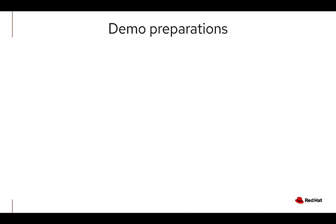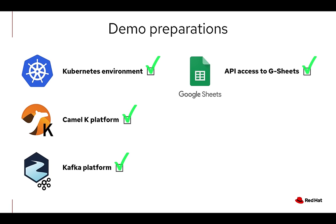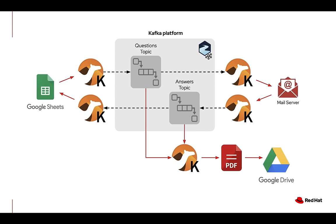First, we need some preparations to get this working. We need a Kubernetes environment ready, and then we want to deploy a CamelK platform. This typically involves deploying the CamelK operator who will do all the work. We have also deployed a Kafka platform that will carry all the information and interactions between the different teams. We need to prepare API access to Google Sheets, a mail server to simulate team interactions, and access to Google Drive to upload reports.